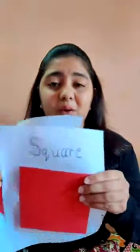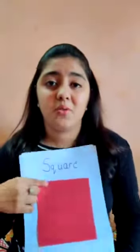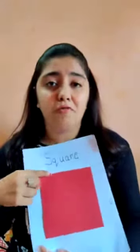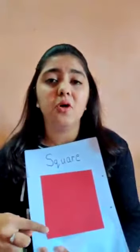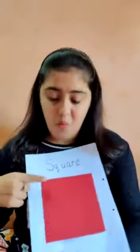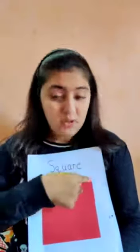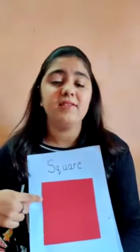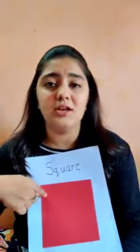The next shape is square. Square has four sides and four corners. Let's count: one, two, three and four. It has four sides and four corners.